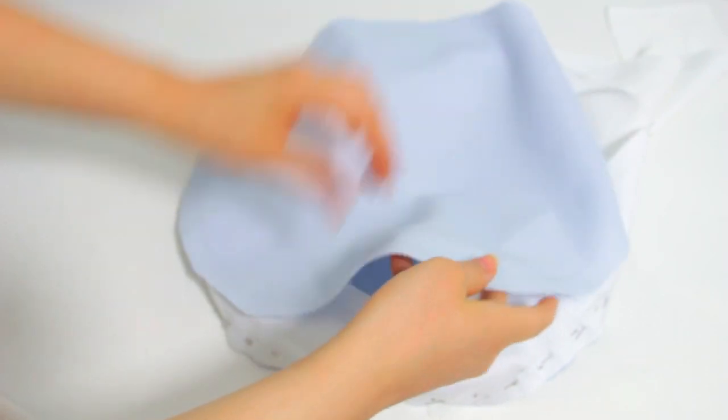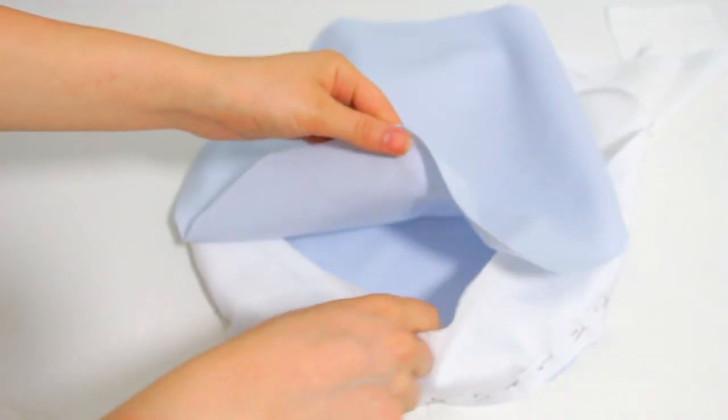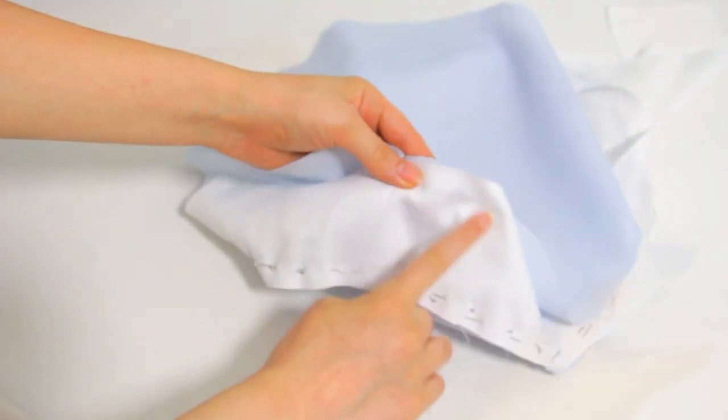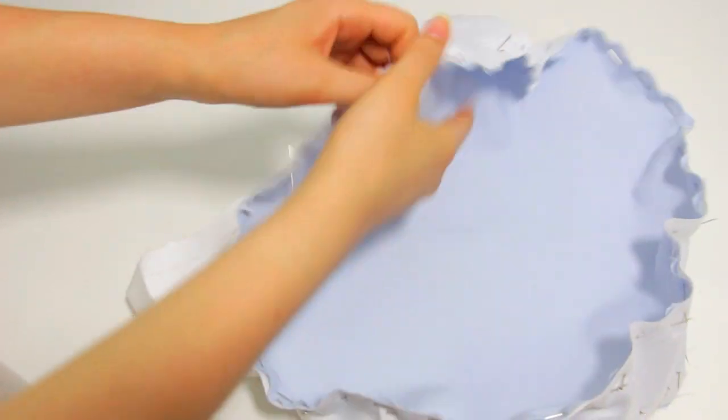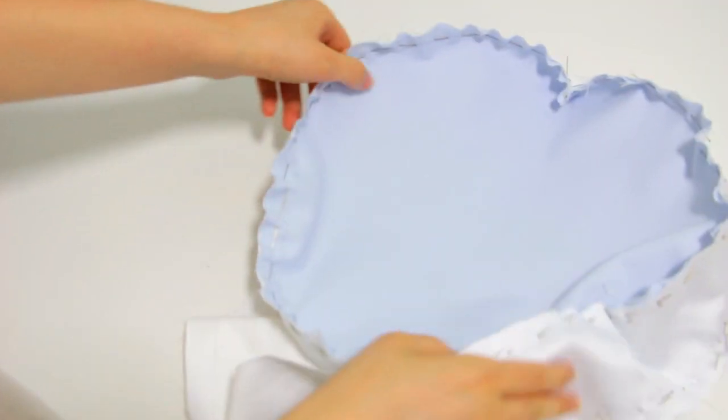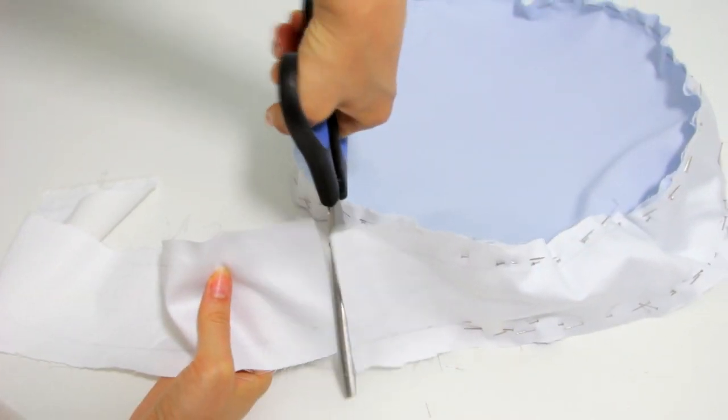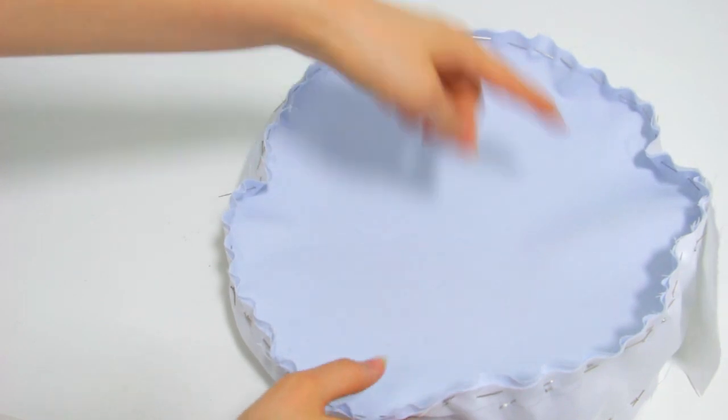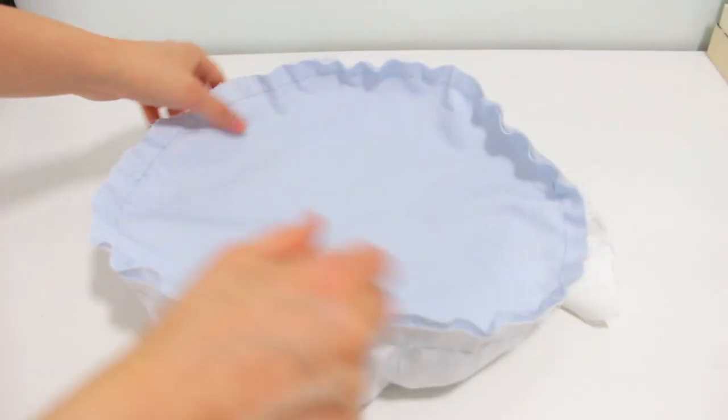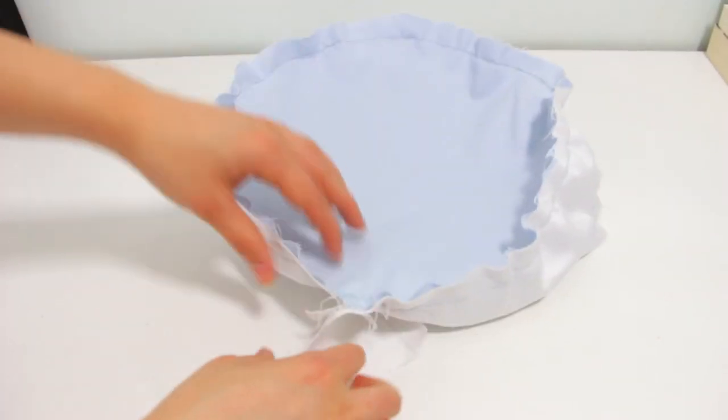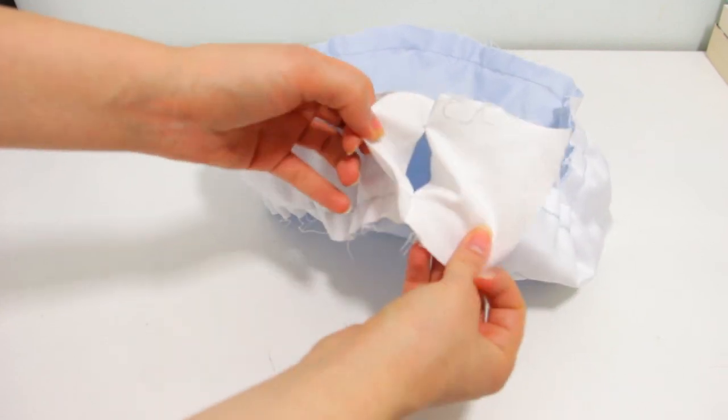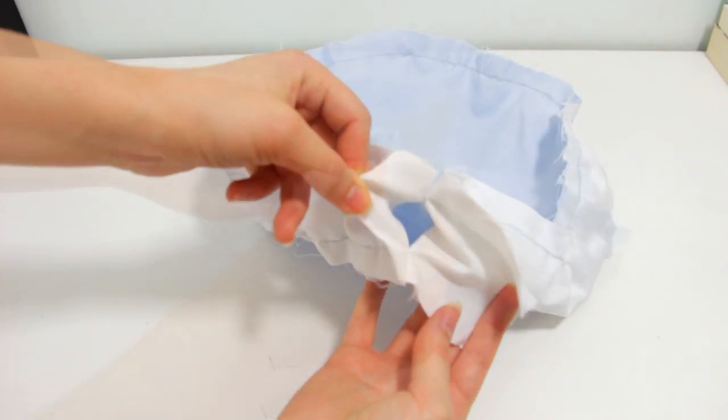Then put the other blue circle on top and pin that too. Cut out any excess from your white fabric like so. Now it's time to sew or glue all the way around on both sides, and remember to leave this little gap without sewing.